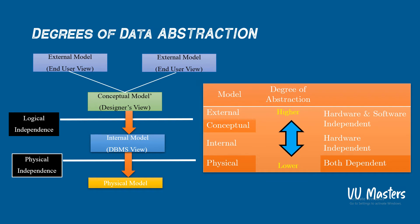We are talking about degrees of data. First we have talked about the external model or external views, which we call user view. Then conceptual model or designer view, which is combined. As compared to external model there is less or lower abstraction. Today we are talking about internal model or database management system — how to see the database or data. In the DBMS or internal view, there is less conceptual and external but more physical; there is a little bit of abstraction.